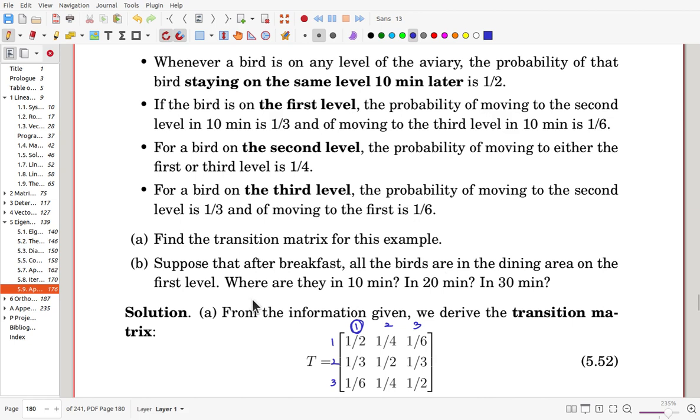So that, now, start with that, we multiply the transition matrix once, and twice, and also three times, to get the probability of being. And then we multiply the birds in 10 minutes, 20 minutes, and 30 minutes.